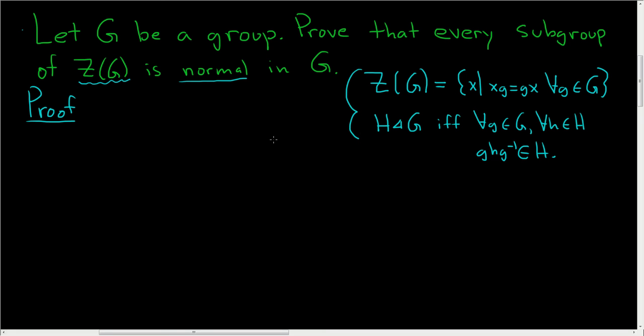So armed with this, we will go ahead and complete the proof. So we have to show that every subgroup of the center is normal in G. So we'll start by taking a subgroup of the center.